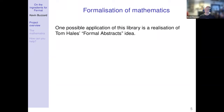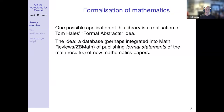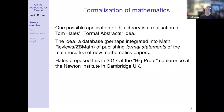One thing you could do with this collection of computer-checked mathematical theorems and proofs is realize Tom Hales's formal abstracts idea. In 2017, Tom Hales gave a talk at the Newton Institute where he proposed that it would be interesting if the mathematical community started writing down precise statements of exactly what they've been proving — not just math reviews, but actual computer code corresponding to those statements. A very precise digitized version of math reviews.